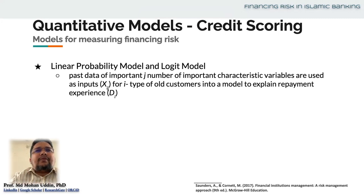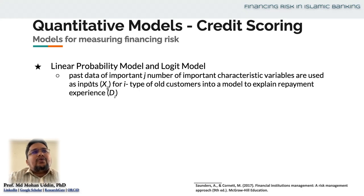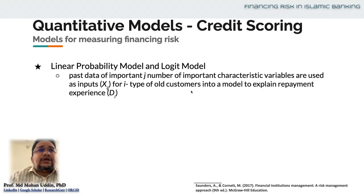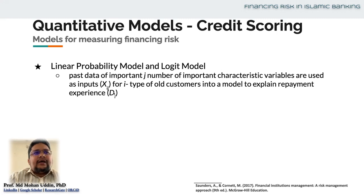For example, we can think about different types or classes of borrowers, or different classes of parties who take financing from us. Let's say they are identified as I-type. I-type is a particular type of borrower. We try to use the past data of important characteristic variables as input for a particular type of old customer into the model to explain repayment experience — meaning whether the customer has defaulted or not. This is why the notation is D here. DI represents the past default behavior of I-type customer.